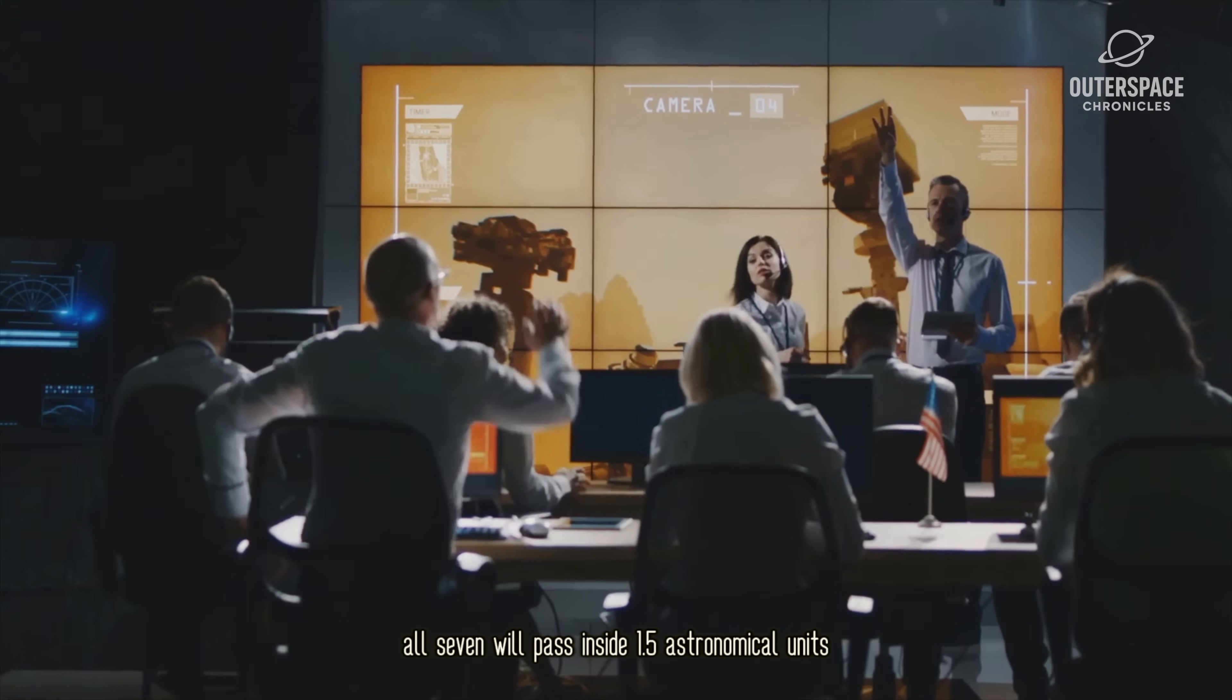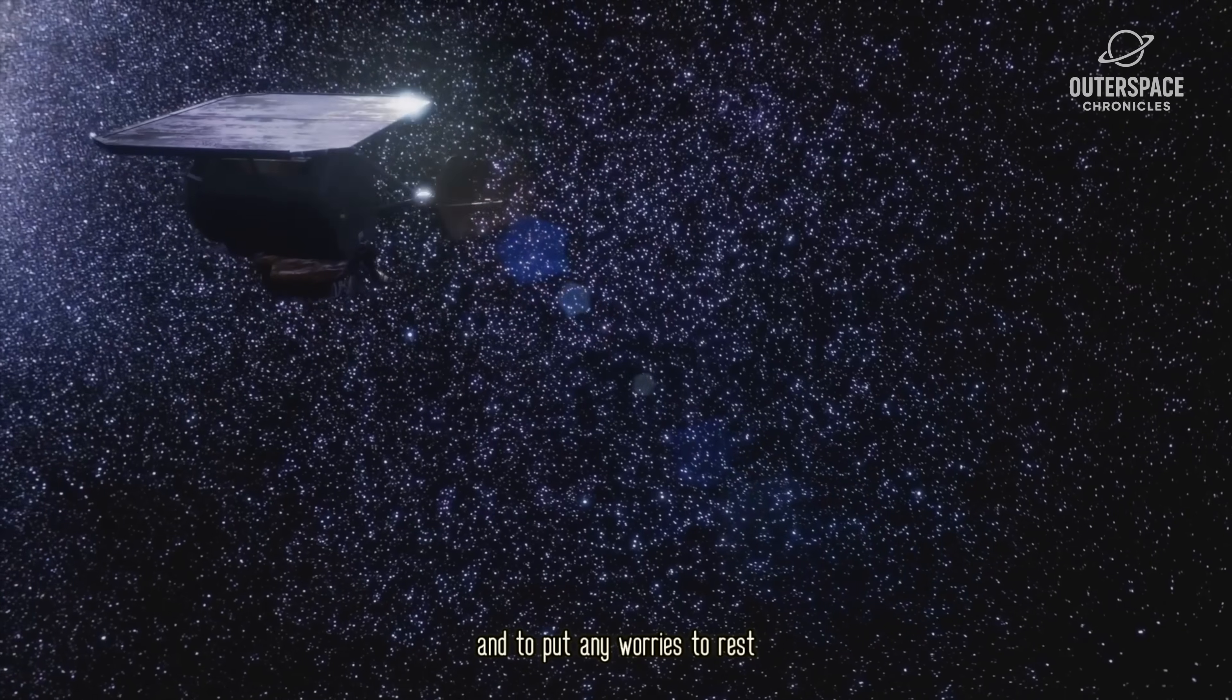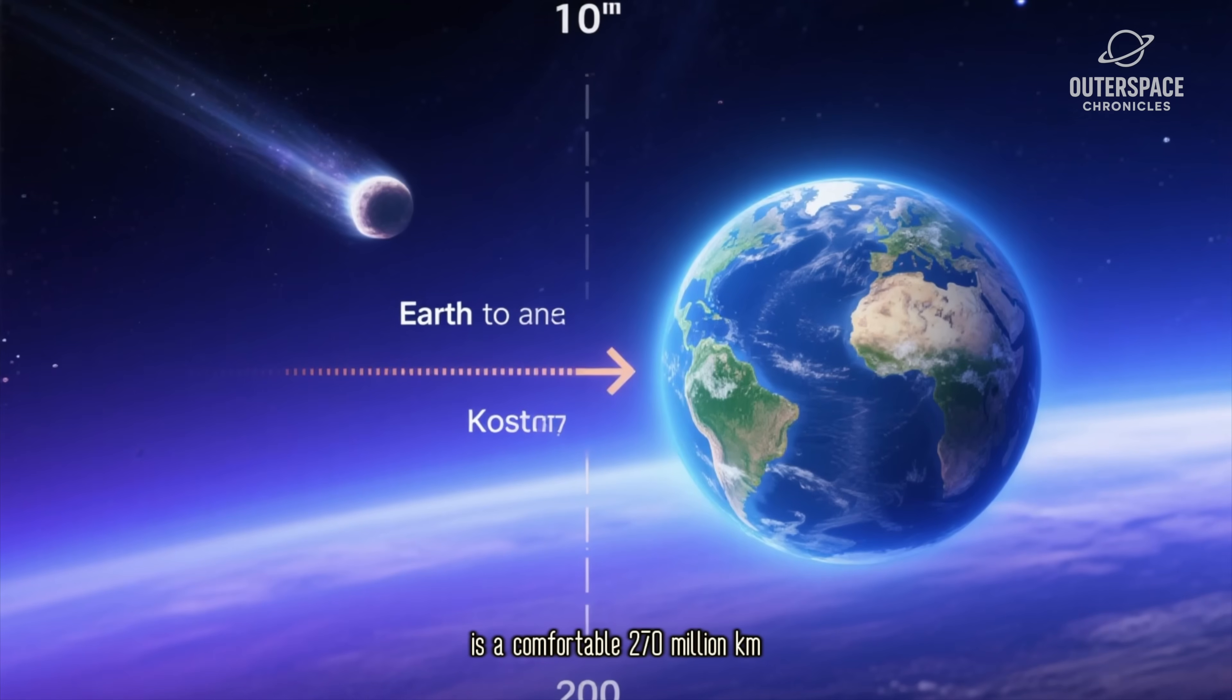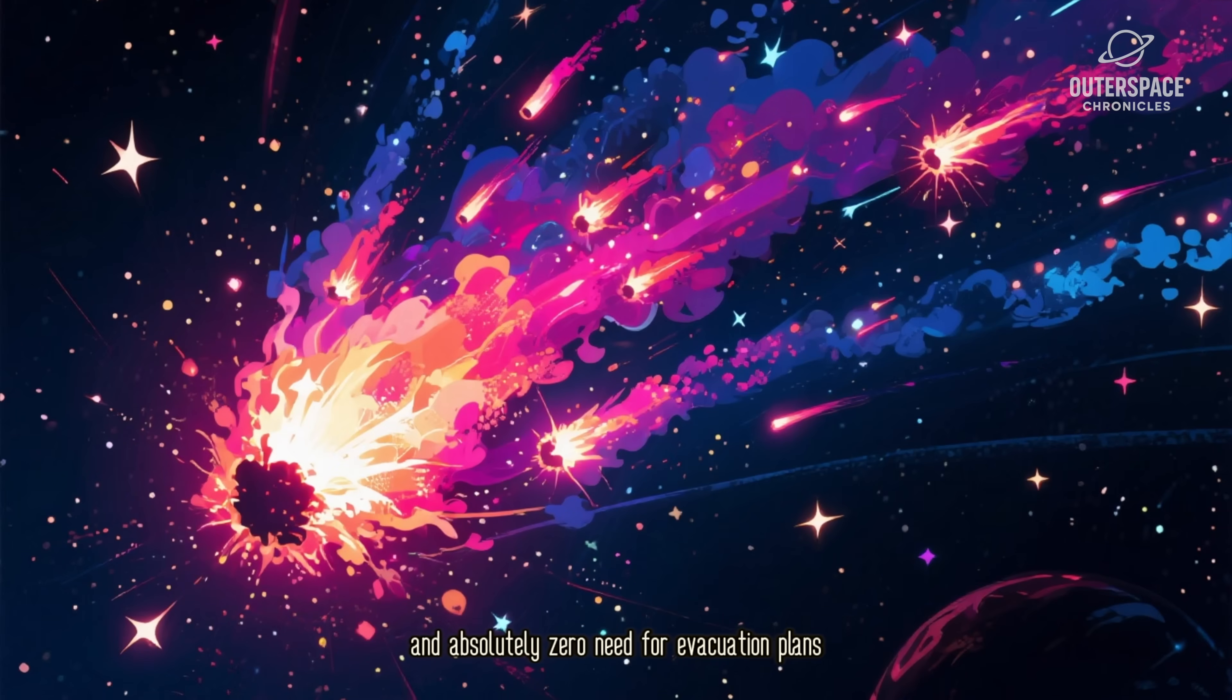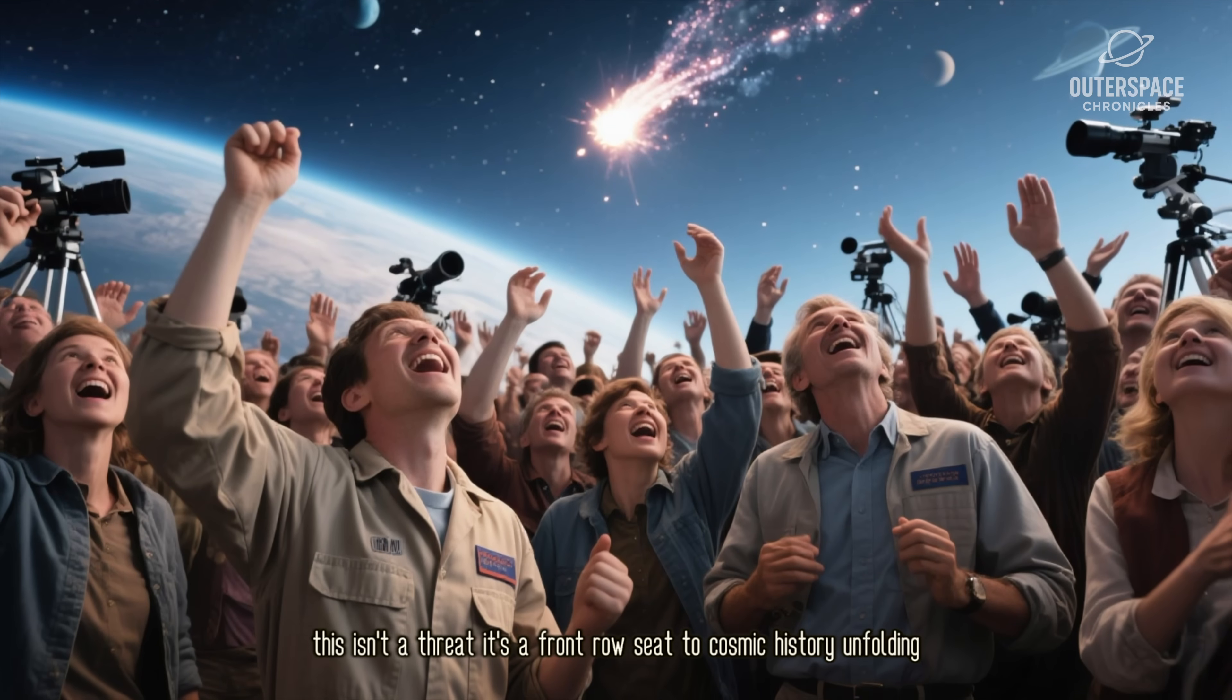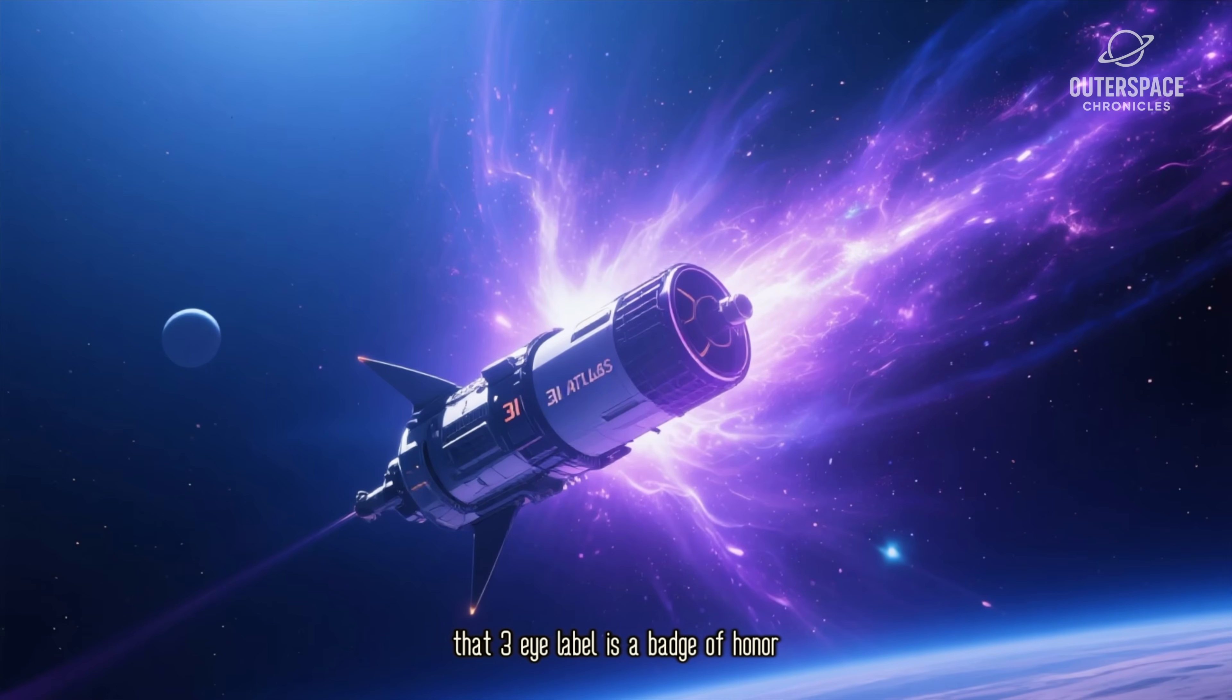The inner solar system is about to feel crowded in the best way possible. All seven will pass inside 1.5 astronomical units, well within Mars orbit, between mid-September and the end of October. To put any worries to rest, the closest any of them will come to Earth is a comfortable 270 million kilometers. This isn't a threat, it's a front row seat to cosmic history unfolding.